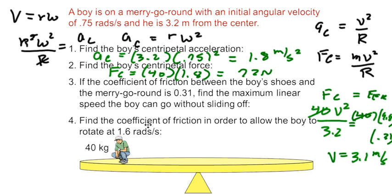Now the last one, find the coefficient of friction in order to allow the boy to rotate at 1.6 rads per second. So one more time, we're going to see that force centripetal is equal to force of friction. Now since this is 1.6 radians per second squared, I'm going to choose AC equals R omega squared and multiply that by mass.